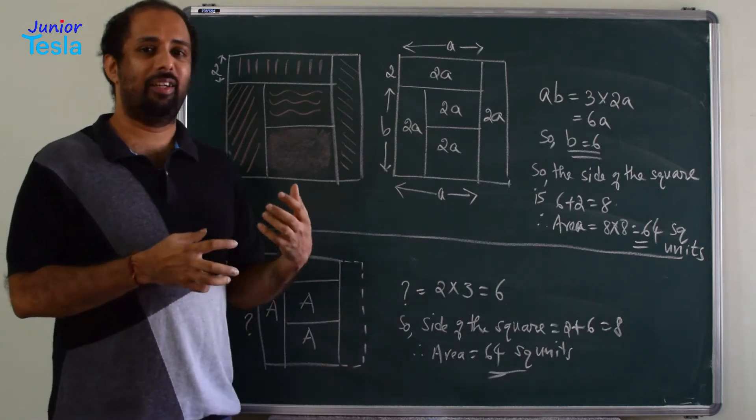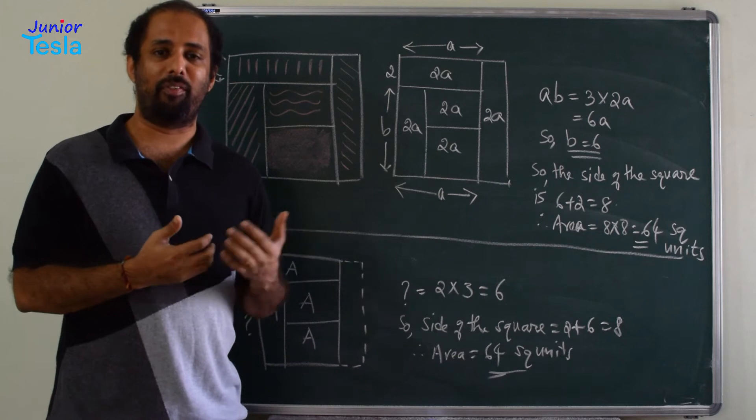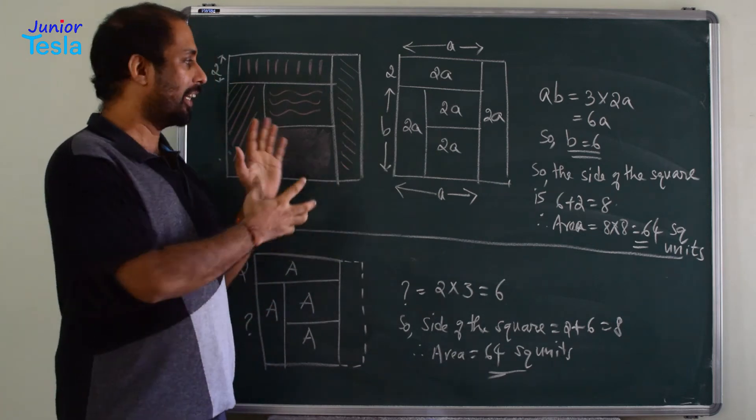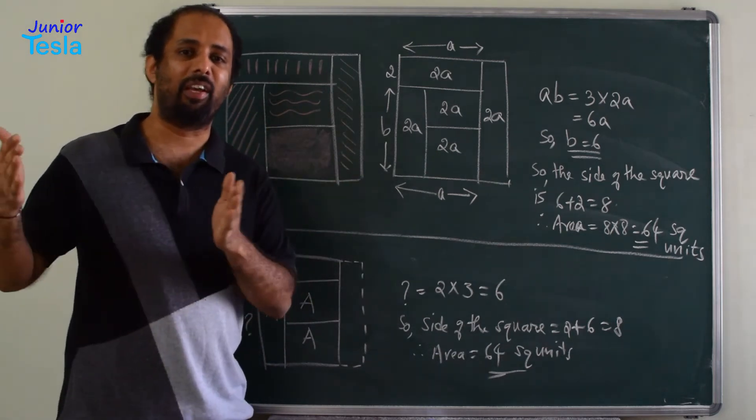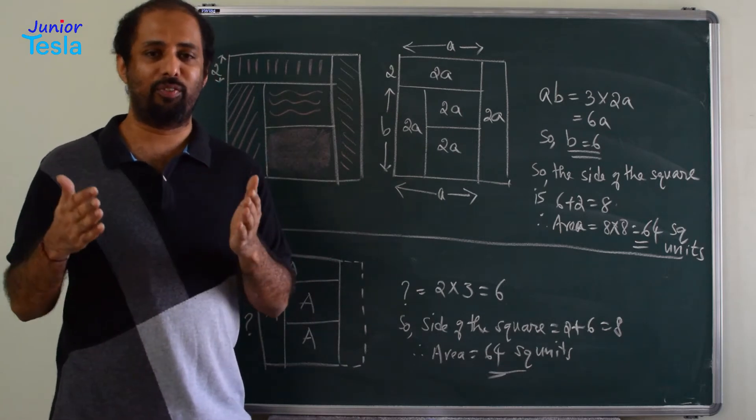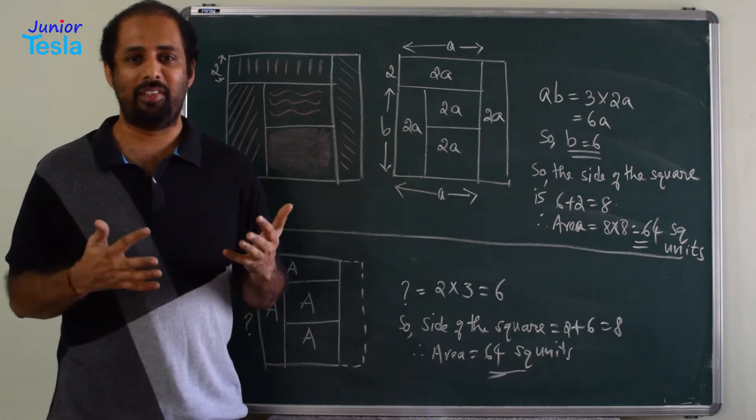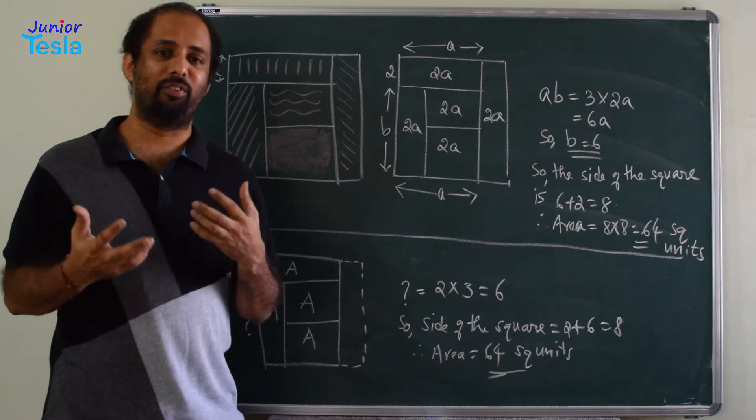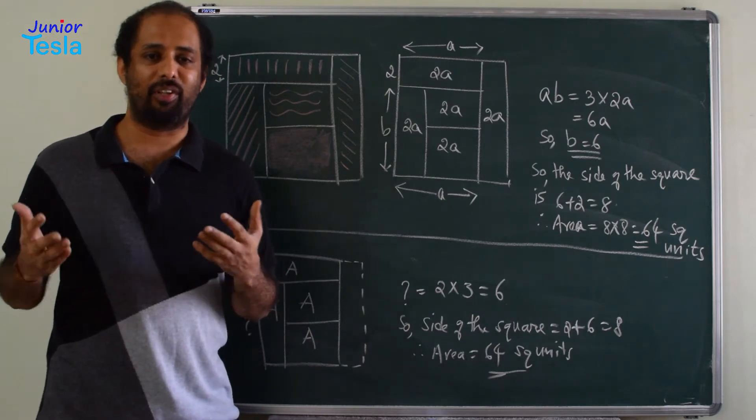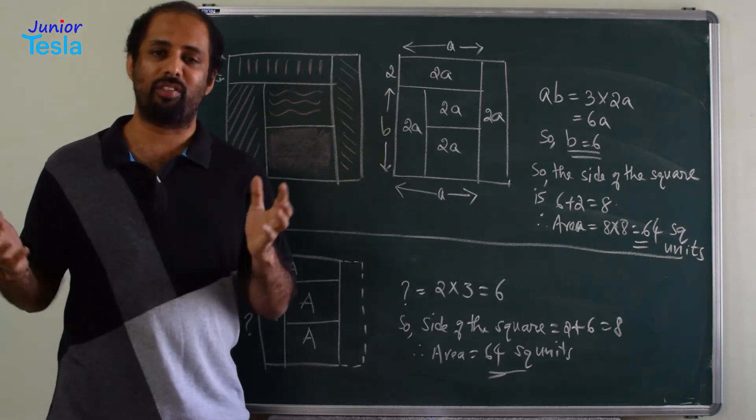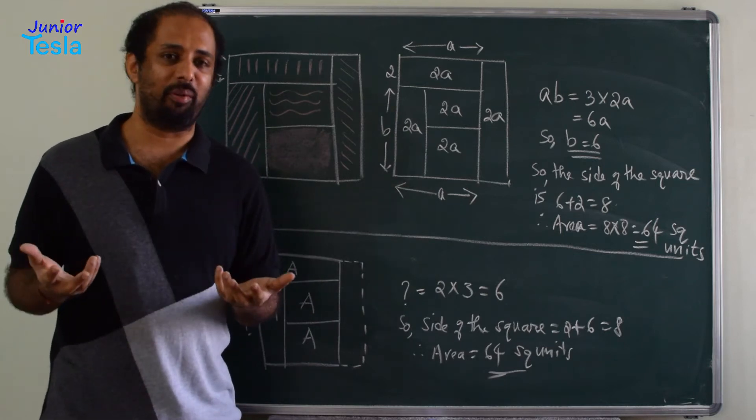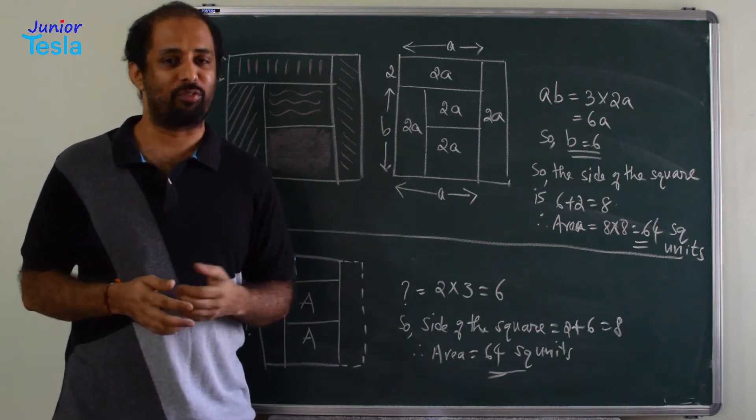In the first solution in our previous episode, what we had done is we had taken the problem and directly started working out. We started giving different values for the dimensions A, B, C, D, X, Y, Z, etc. and tried to find the areas of different regions using those unknowns, compared them, found the values of A, B, C, etc. And finally, we got the total area of the square.